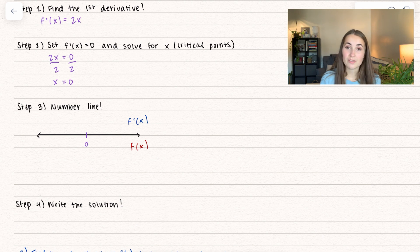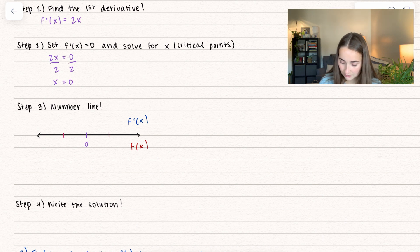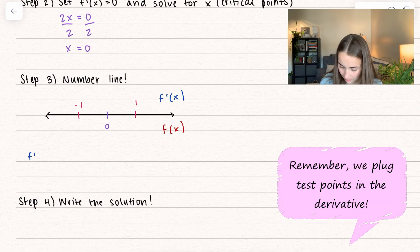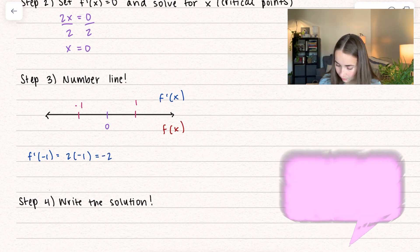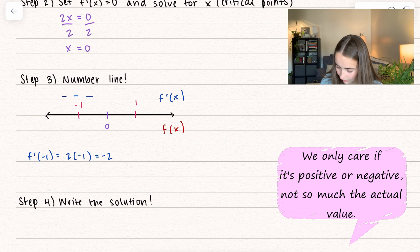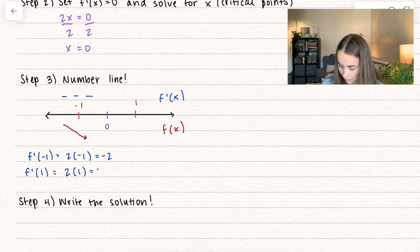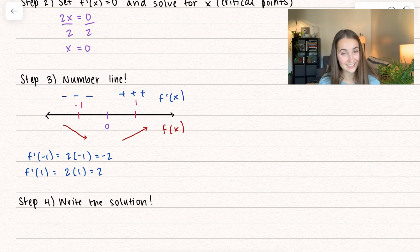On our number line, f prime of x on the top tells us — positive or negative — what our actual function is doing. We have a critical value of 0, so we take test points on either side of the intervals. I'll plug in negative 1 and positive 1. f prime at negative 1 equals 2 times negative 1, which is negative 2 — a negative derivative tells me the function is decreasing. f prime at 1 equals 2 times 1, which is positive 2 — the derivative is positive, so the function is increasing.